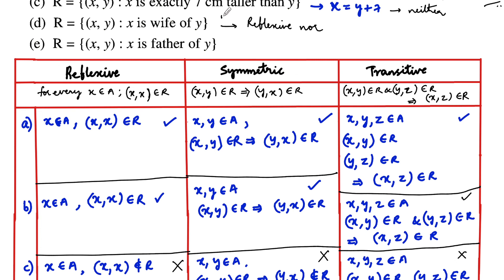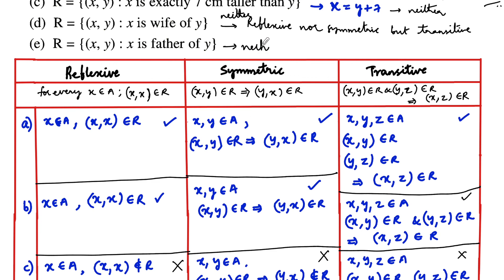To summarize: relation (d) — x is wife of y — is neither reflexive nor symmetric, but is transitive. Relation (e) — x is father of y — is neither reflexive, nor symmetric, nor transitive.